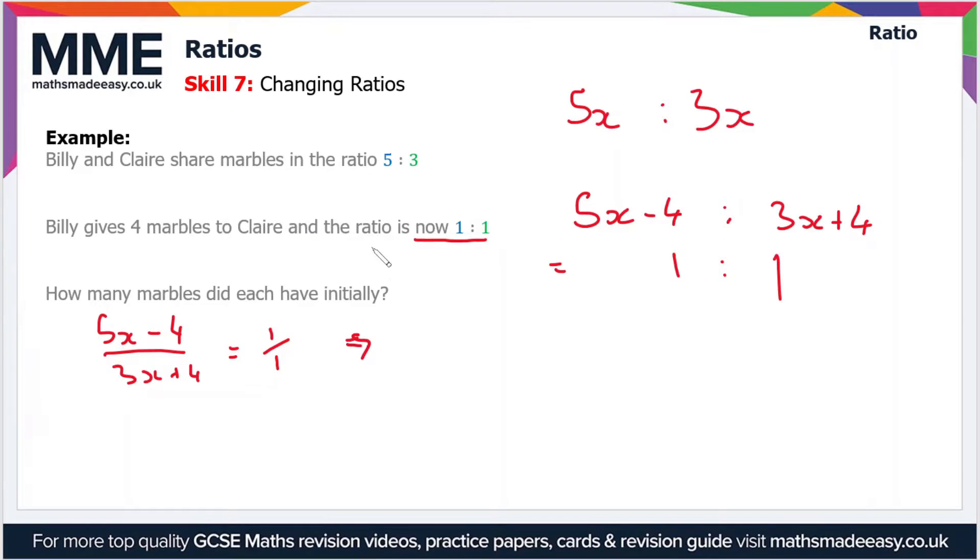Bringing this working out over here, 5x - 4 = 3x + 4. I've multiplied up the denominators, so we're left with this expression which we can solve for x.